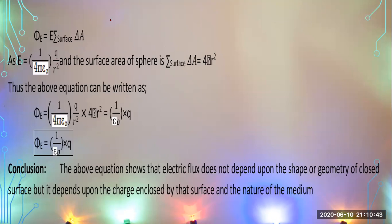The total surface area of the sphere is 4pi r squared. Substituting E = (1 over 4pi epsilon naught)(q over r squared) and the area = 4pi r squared into the total flux formula, the 4pi and r squared terms cancel, giving: phi-e = (1 over epsilon naught) times q. This is the final result — the statement of Gauss's law: electric flux through a closed surface equals 1 over epsilon naught times the enclosed charge.